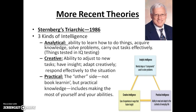Sternberg came up with the idea that we have three kinds of intelligence. Analytical — the ability to learn how to do things, acquire knowledge, solve problems, and carry out tasks effectively. These are things tested in IQ testing. Creative — new tasks, respond effectively to situation. And practical — not book learning but practical knowledge, including making the most of yourself and your abilities. So instead of specifics, we have three general categories.